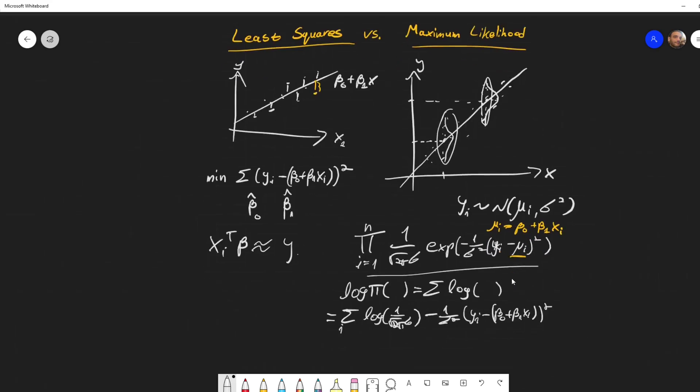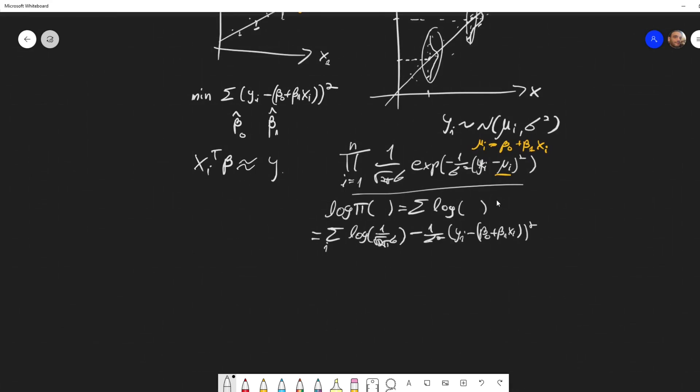Notice that this thing over here does not depend at all on our coefficients. Only this expression over here depends on our coefficients. So if we want to maximize this expression, notice also that this term will cancel out. It will, once we differentiate and equate to zero, this term has exactly zero meaning.